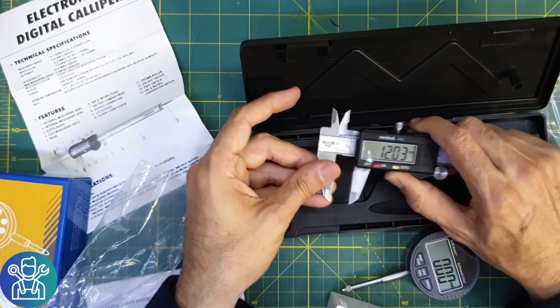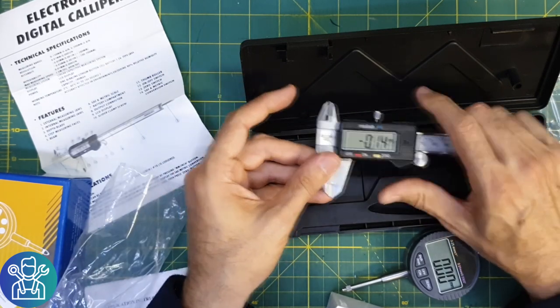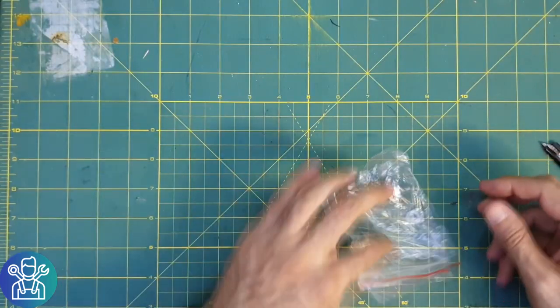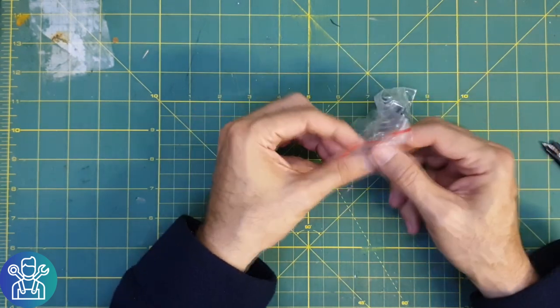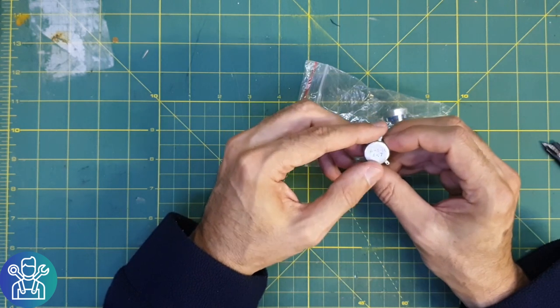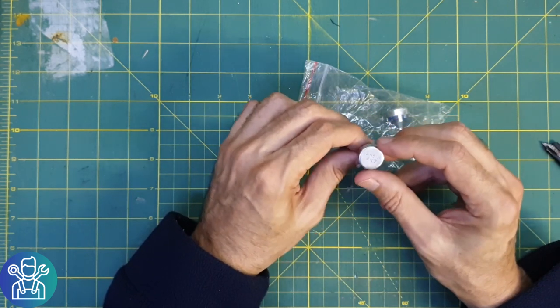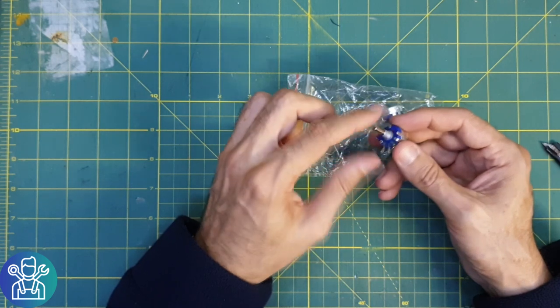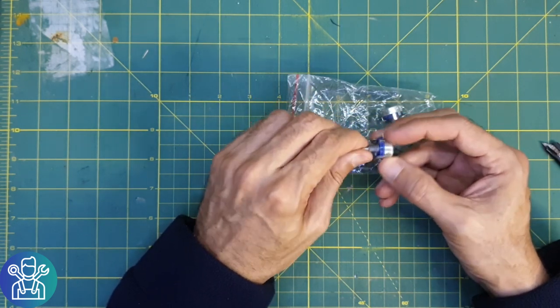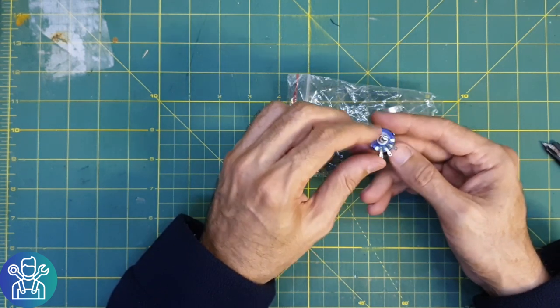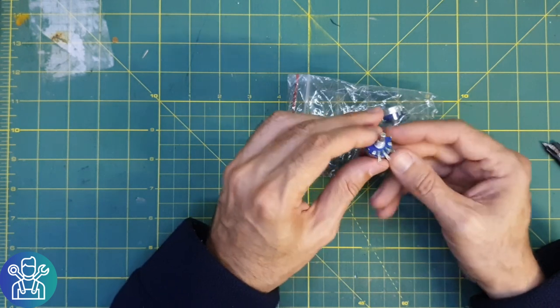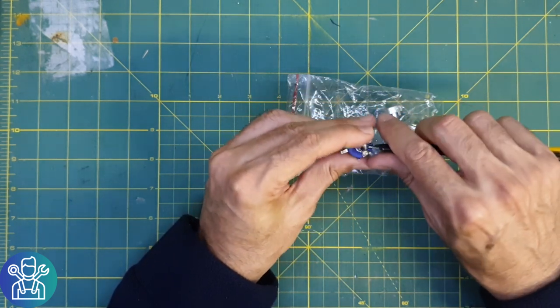Okay, the next package, some more potentiometers. These are 4.7 kilo ohm. So they're flat and there is no surface to hold the knob so that could slip sometimes, but I'll give it a try and see how it works.